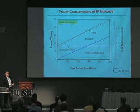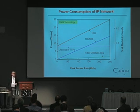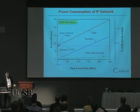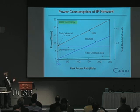At the moment with today's internet, the peak access rate is about 3 megabits per second in 2009, and energy consumption is dominated by the access network with only small components from routers and fiber links. We estimate the internet uses about half a percent of electricity supply — just the telecommunications part, excluding data centers which may account for about 2% of the total.